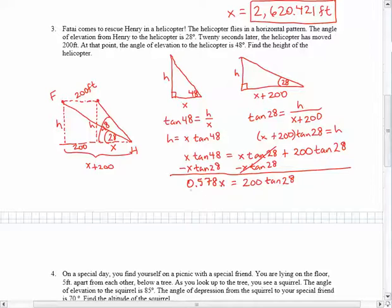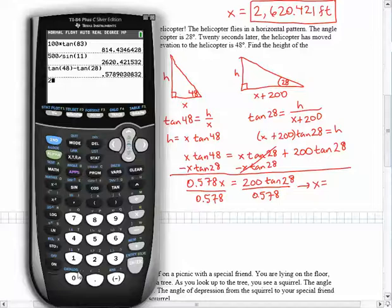And then to get x, I would just divide both sides by 0.578. So I would end up with x equaling 200 times the tan of 28 divided by that.